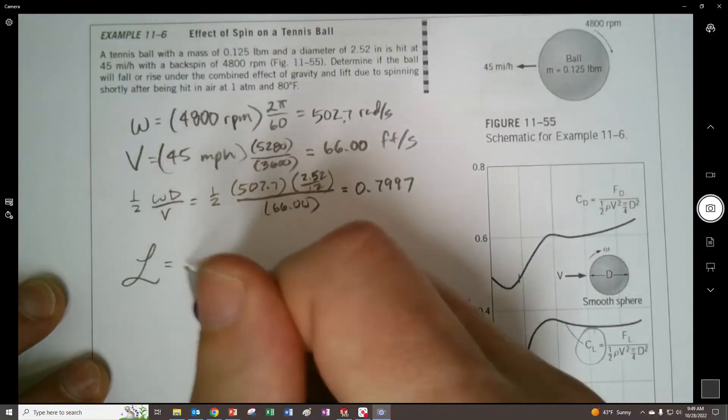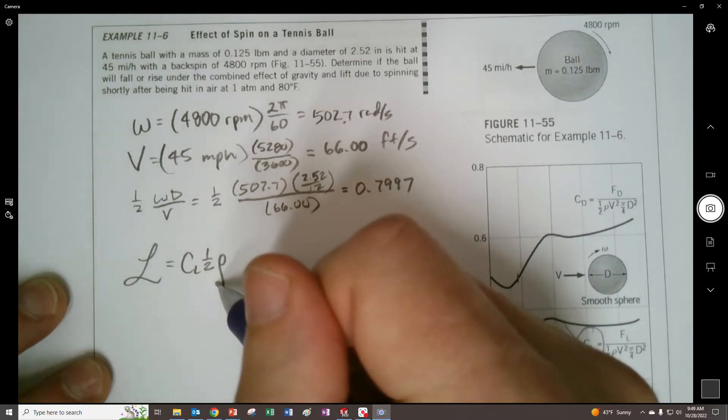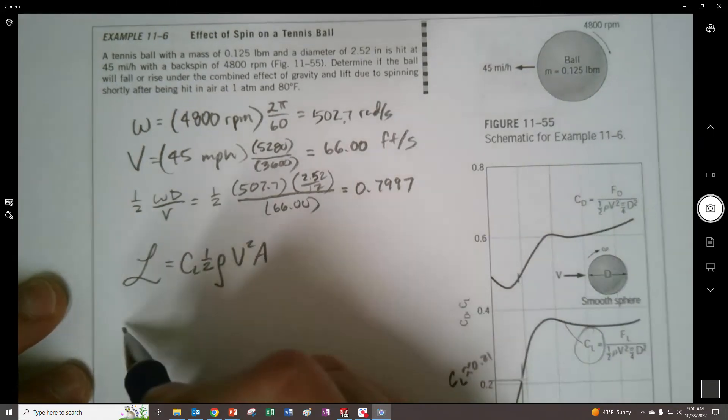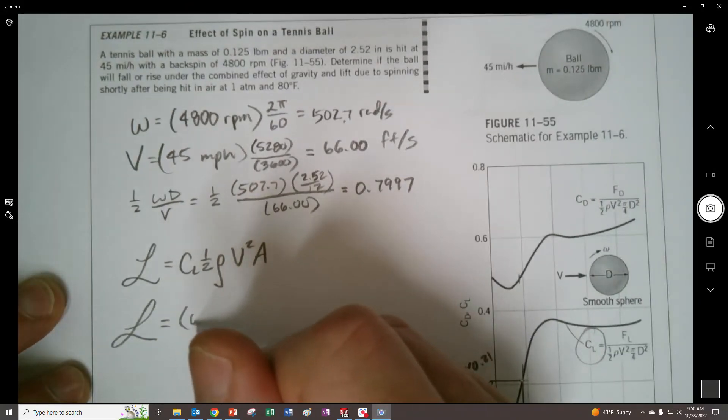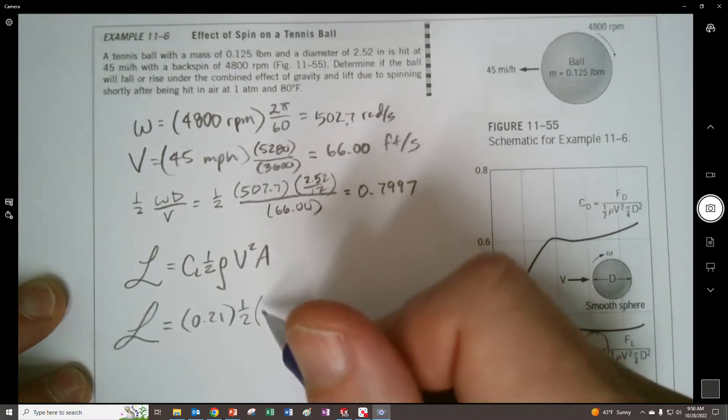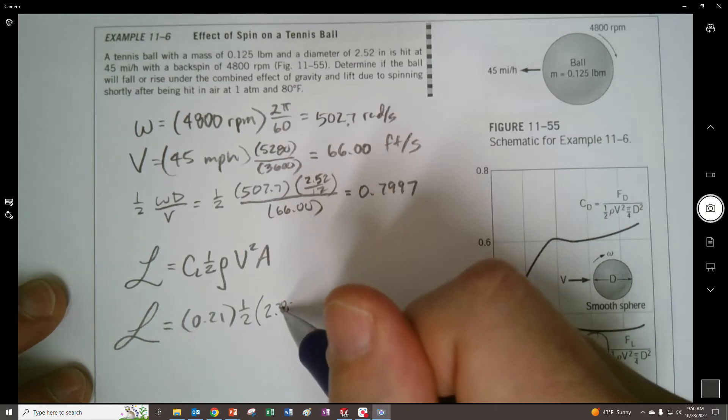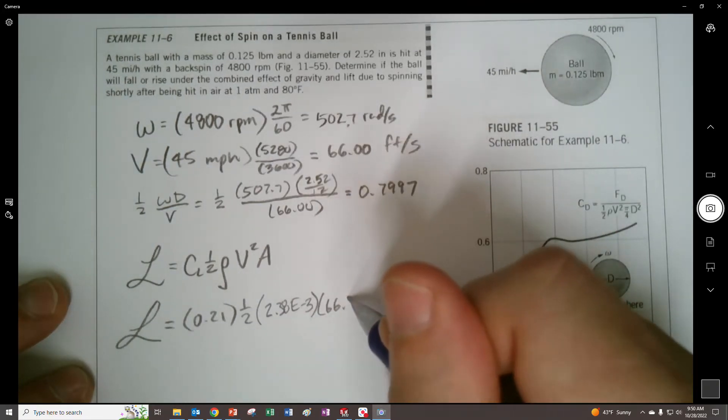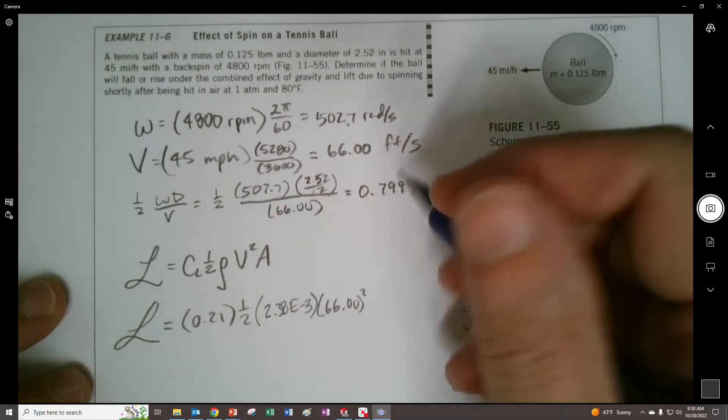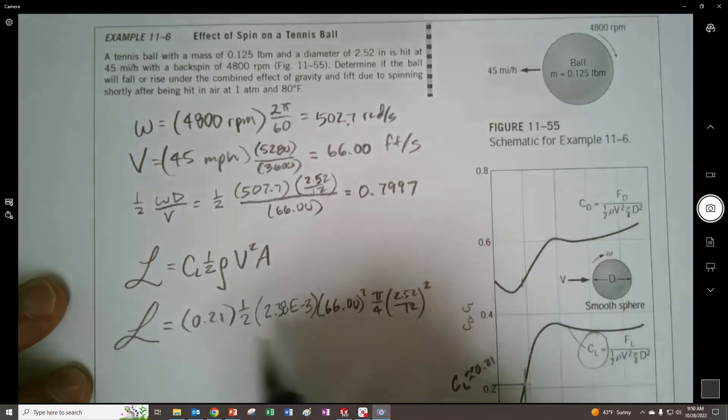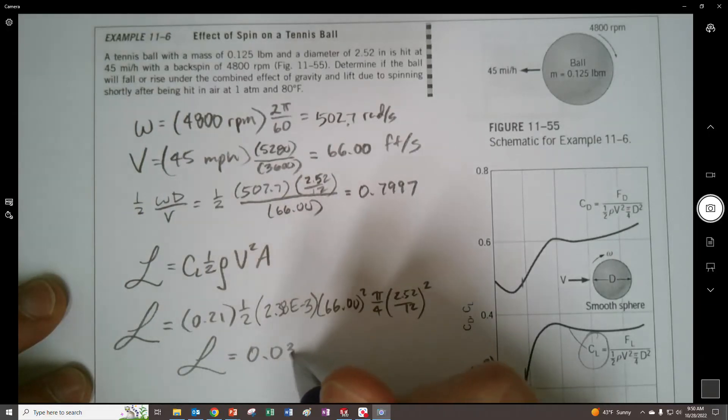So remember that the lift is going to be the lift coefficient times one half rho V squared A. The lift coefficient that we're going to find is 0.21 right there, times one half, and we'll use the density. I'm going to use British gravitational, use slugs, 2.3 times 10^-3 slugs per cubic foot, because I think pounds mass are a pain. Velocity 66 feet per second, pi over 4, and then to get the area, the frontal area, 2.52 divided by 12, and that's got to be squared to get the area, and we'll get a lift of 0.03770 pounds.